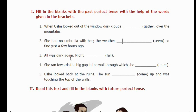All was dark again. Night had fallen. All was dark again — everything had become dark. Night had fallen — the falling of night happened before everything became dark. So the event that finished earlier uses Past Perfect, and that is why we use 'had fallen' here.